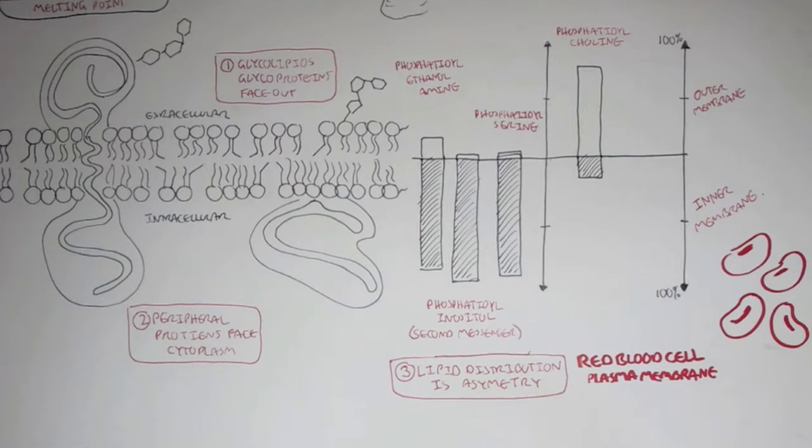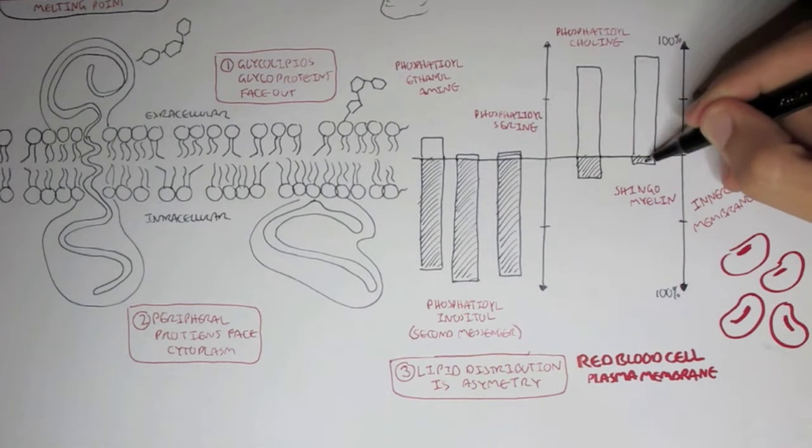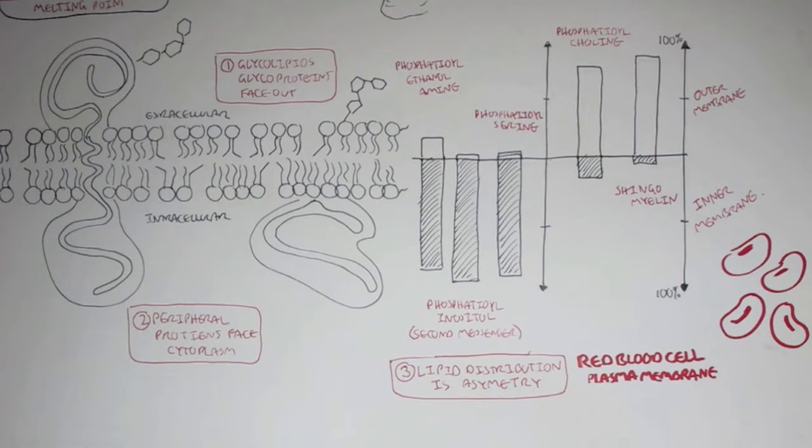Phosphatidylcholine, on the other hand, there's higher concentration on the outer membrane leaflet, as well as sphingomyelin, which is highly concentrated on the outer membrane. So as you can see, the distribution of the different types of lipids vary in the red blood cell plasma membrane. And this is important to know.